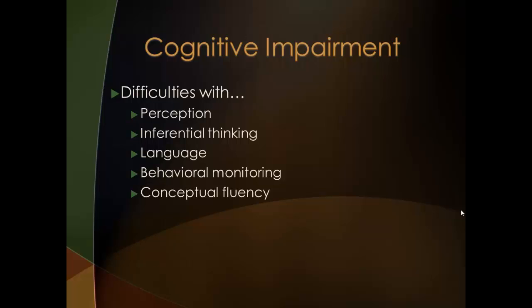Cognitive impairment comes with higher-level processing of the brain. Clients can demonstrate bizarre patterns of speech, use of words, strange behavior, and an inability to understand communication directed at them. We will discuss this at length in our lecture, but nursing interventions should be directed at helping the client during periods especially of acute psychosis. Remember, client safety is always to be considered first.